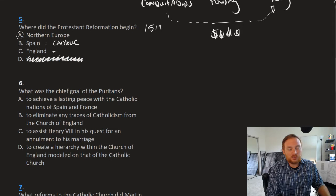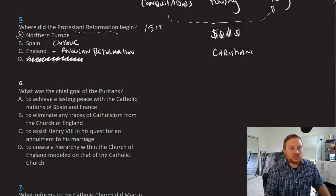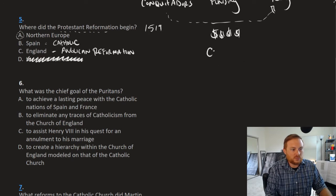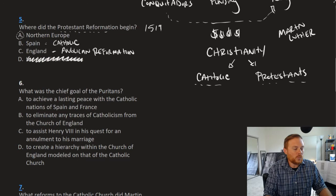England, although it did break away from the Catholic Church, was home to the Anglican Reformation, which was very similar to the Protestant Reformation but different. The Protestant Reformation was the breaking apart of Christianity. Christianity as a religion broke off into two categories, Catholic and Protestant. They're both considered Christians, but there are different versions. This was started by Martin Luther.